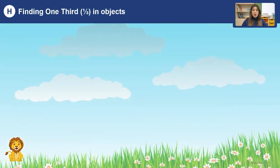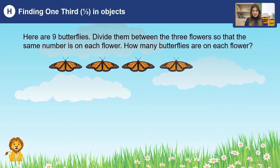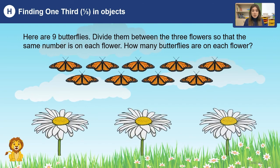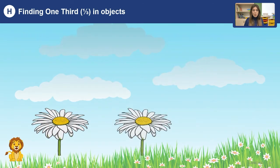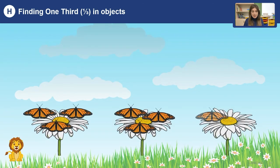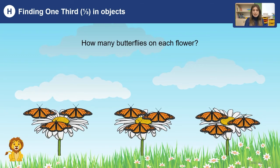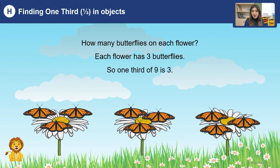Are you ready to find one third in objects? Let's start. Here are nine butterflies — they look very nice. Divide them between three flowers so that the same number is on each flower. How many butterflies are on each flower? Let's count one by one: one, two, three — one, two, three — one, two, three. It means we can see three butterflies on each flower. We can find that one third of nine is three.